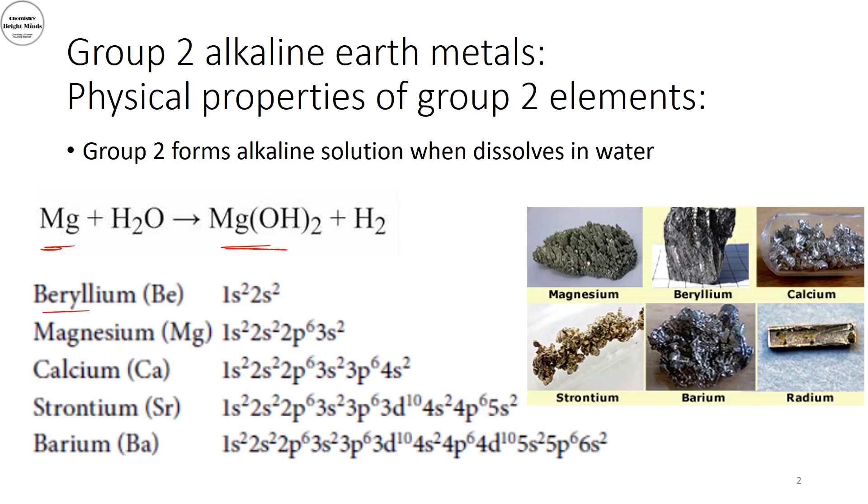Looking down group 2 elements moving from beryllium, magnesium, calcium, strontium, barium, you could see that all of them have the S orbital filled with two electrons where I'm just increasing the shell number down the group.